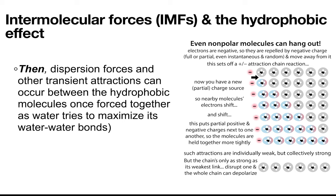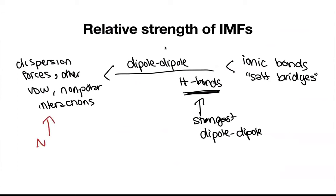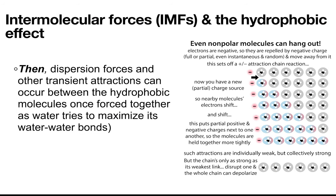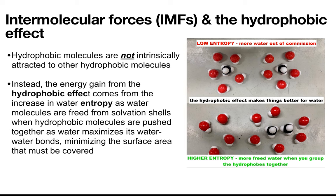You have these interactions that individually are weak, but collectively are strong. This is not an intrinsic desire — it's just that molecules are forced together by circumstances, because water excludes them. Nonpolar doesn't attract nonpolar. It's only when you get those temporary dipoles in a nonpolar molecule that it's able to respond to another molecule that has another instantaneous dipole. So it's not an intrinsic desire.